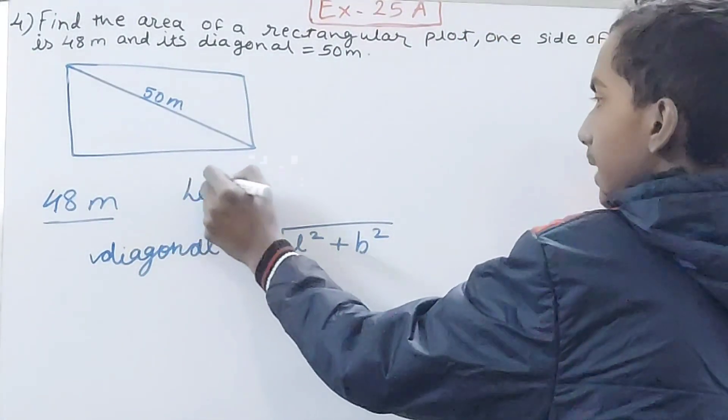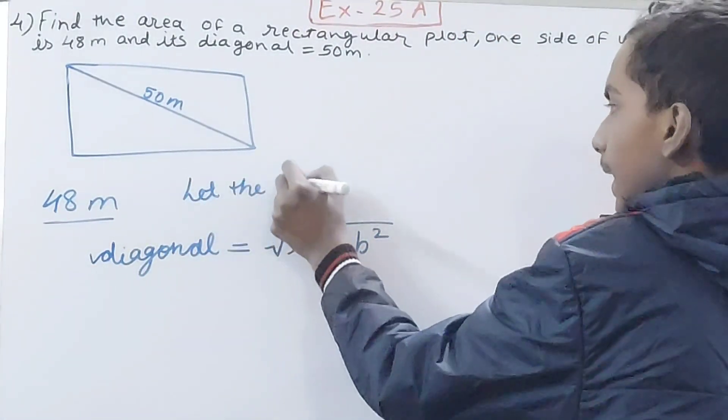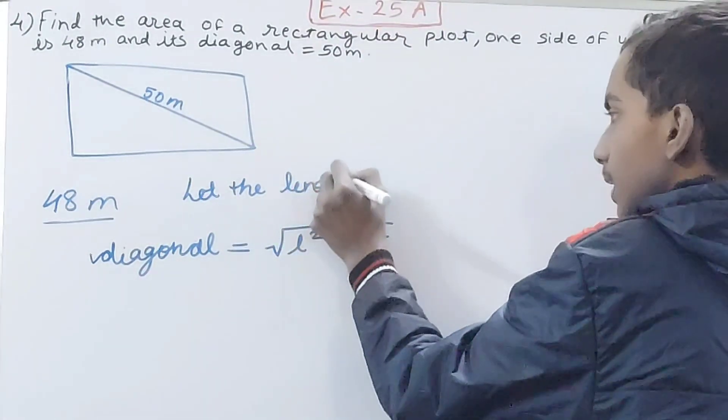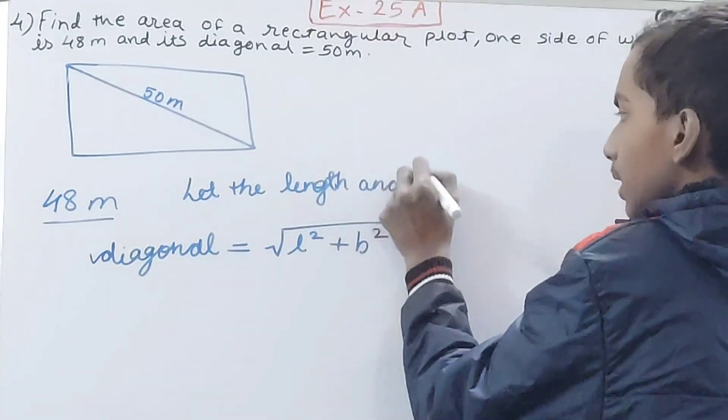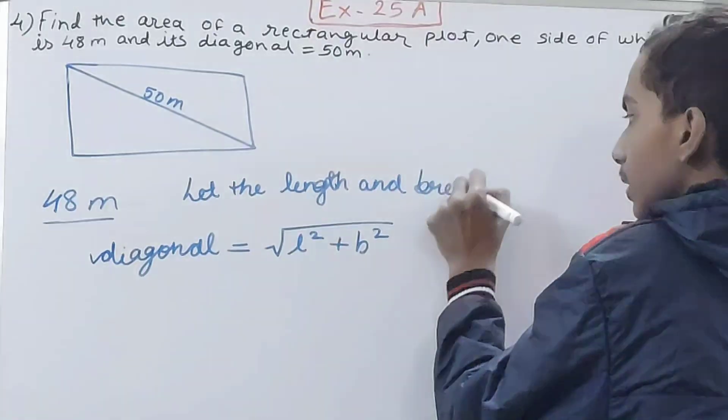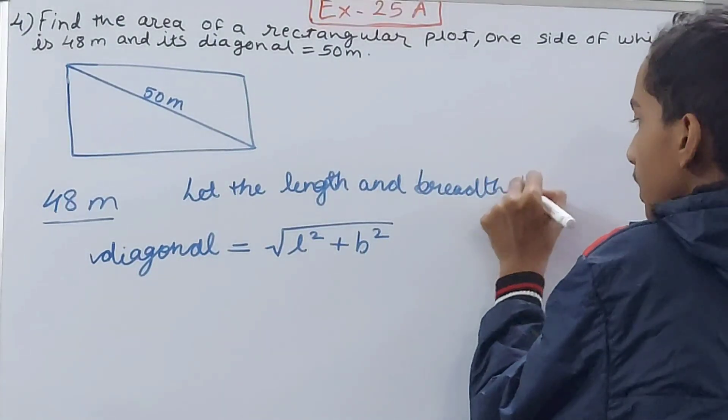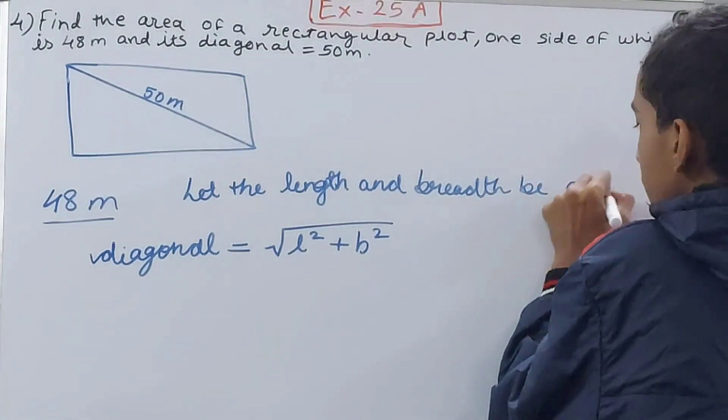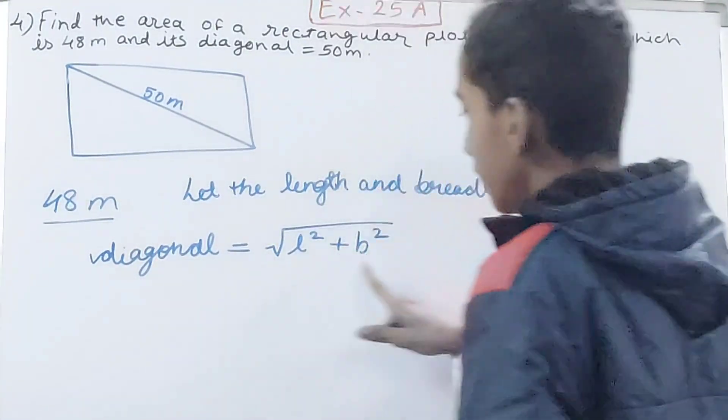So what I will do, let the sides, let the length and breadth be a and b. So in place of length and breadth I have taken a and b.